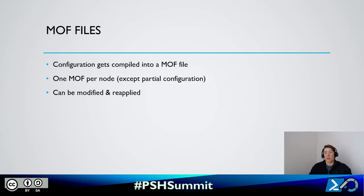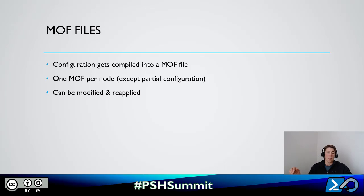When we run that configuration and compile it, we end up with a MOF file. The MOF file is what is delivered to the target node to be enacted. You get one MOF file per node — there's an edge case for partial configurations, but for most DSC use, we'll have one MOF per node. Since they're idempotent, those MOF files can be modified and reapplied to make incremental changes.